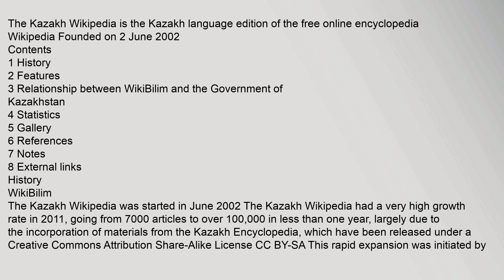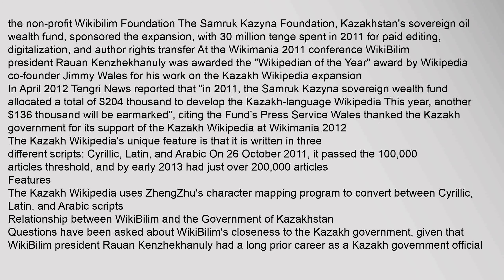The Kazakh Wikipedia had a very high growth rate in 2011, going from 7,000 articles to over 100,000 in less than one year, largely due to the incorporation of materials from the Kazakh Encyclopedia, which have been released under a Creative Commons Attribution Share-Alike license (CC BY-SA). This rapid expansion was initiated by the non-profit Wikibilum Foundation.